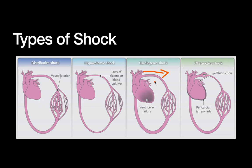Cardiogenic shock is where the heart pump itself is failing to adequately pump blood forward. This can be caused by exacerbations of heart failure, acute myocardial infarctions, or arrhythmias. Finally, obstructive shock — the most rare form — is caused by an actual obstruction preventing blood from moving forward, classically pericardial tamponade, pneumothorax, or a pulmonary embolus.